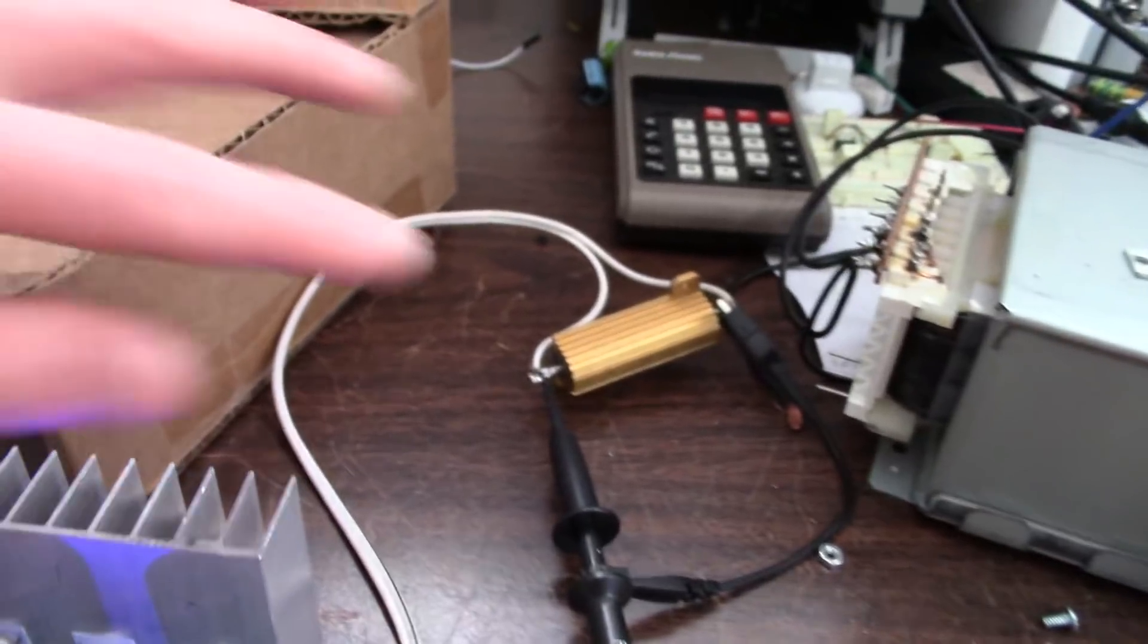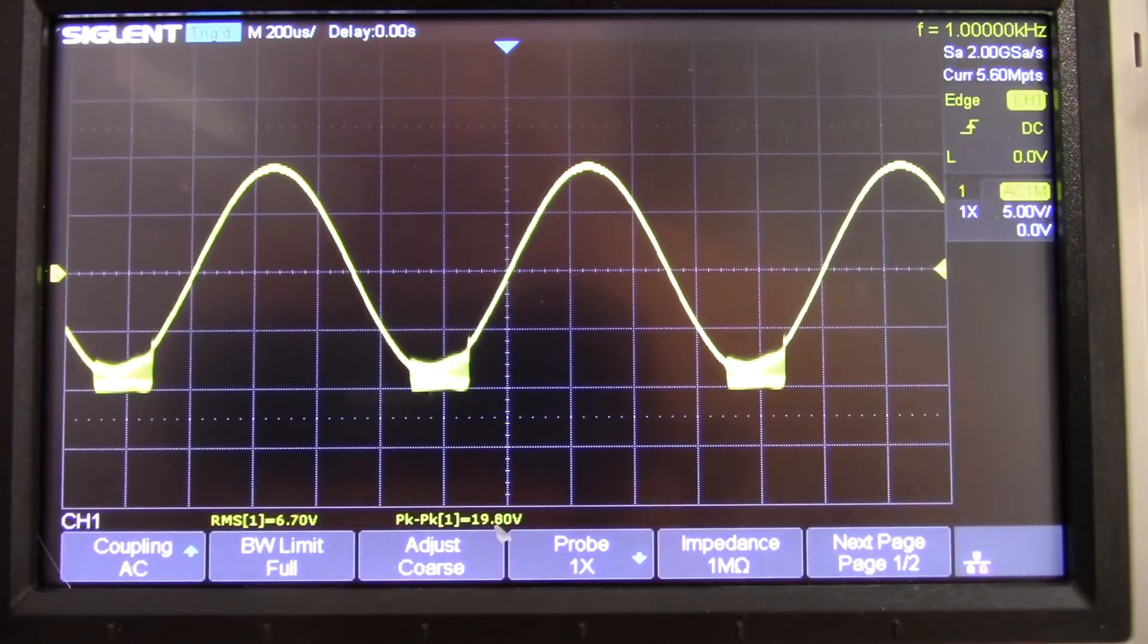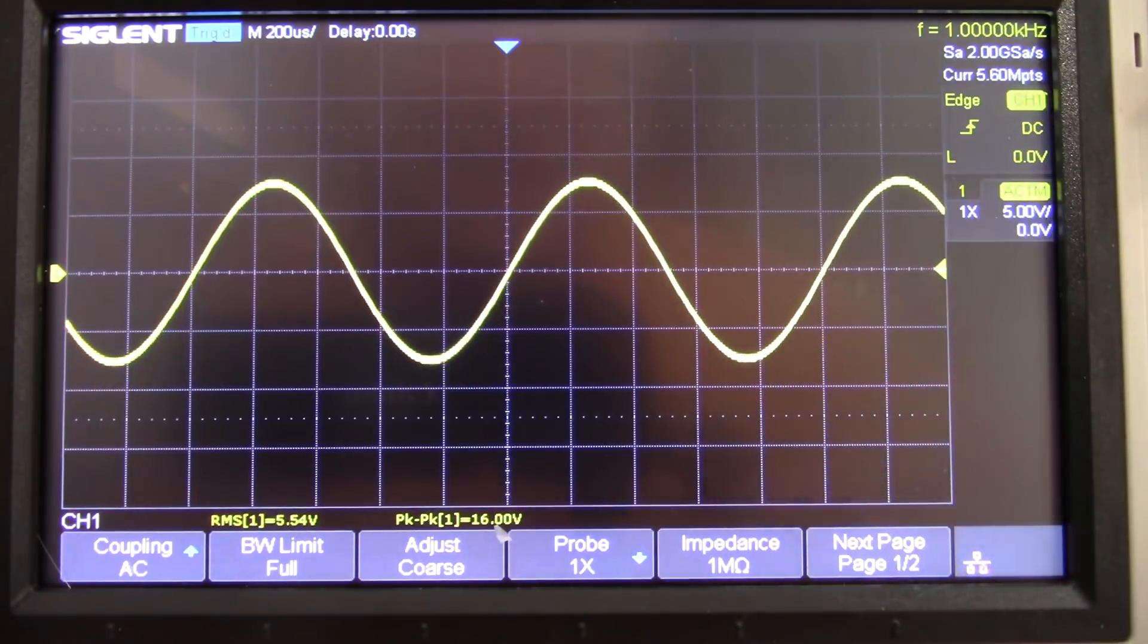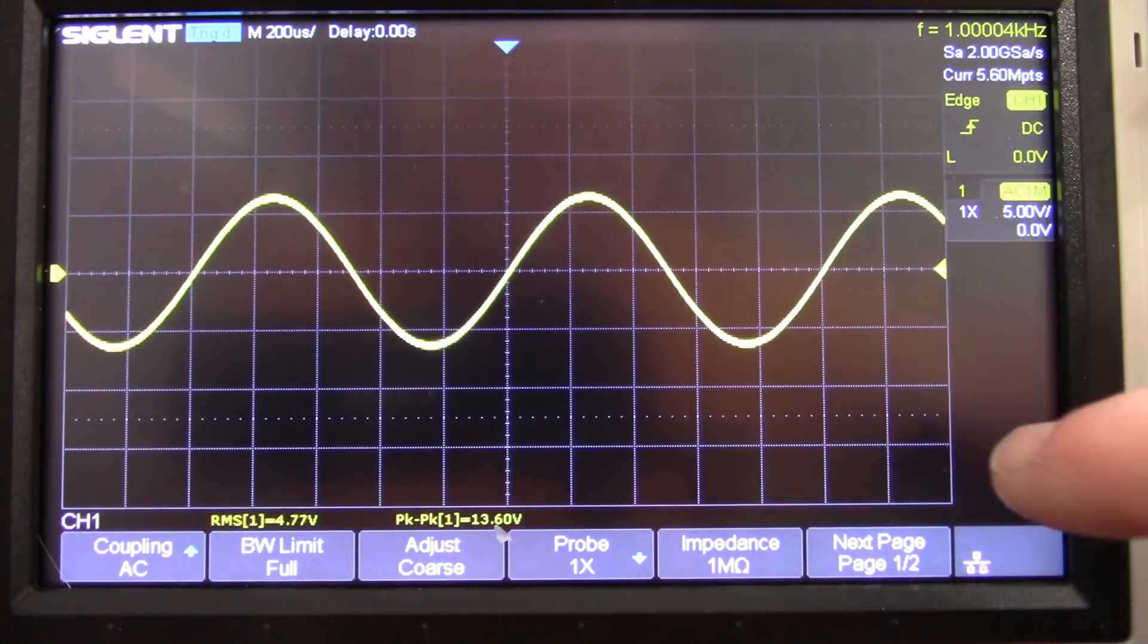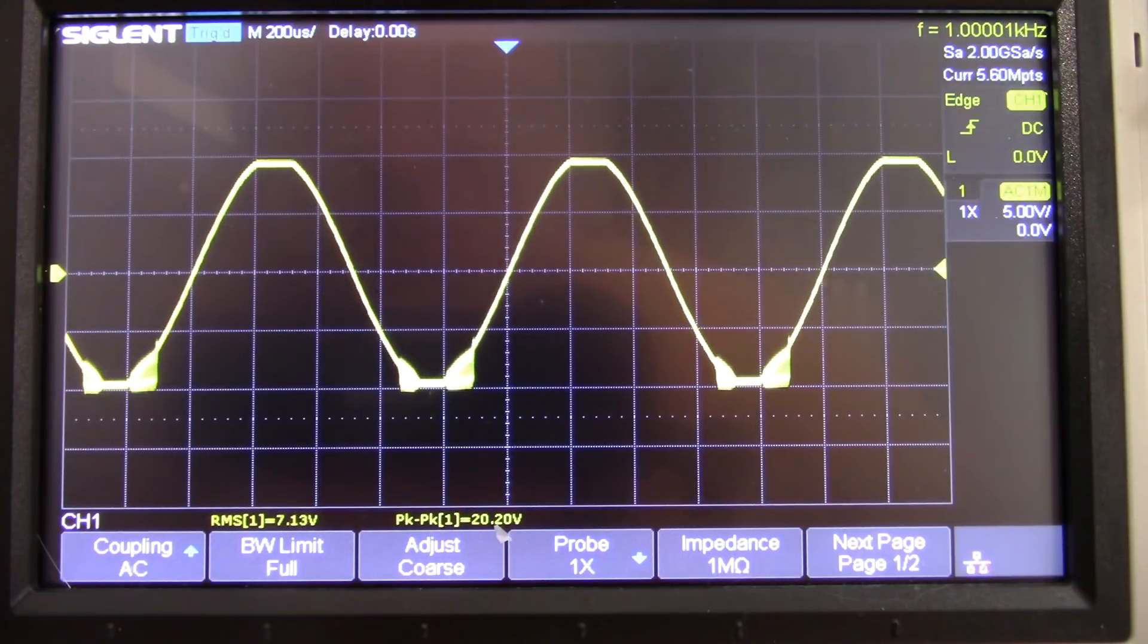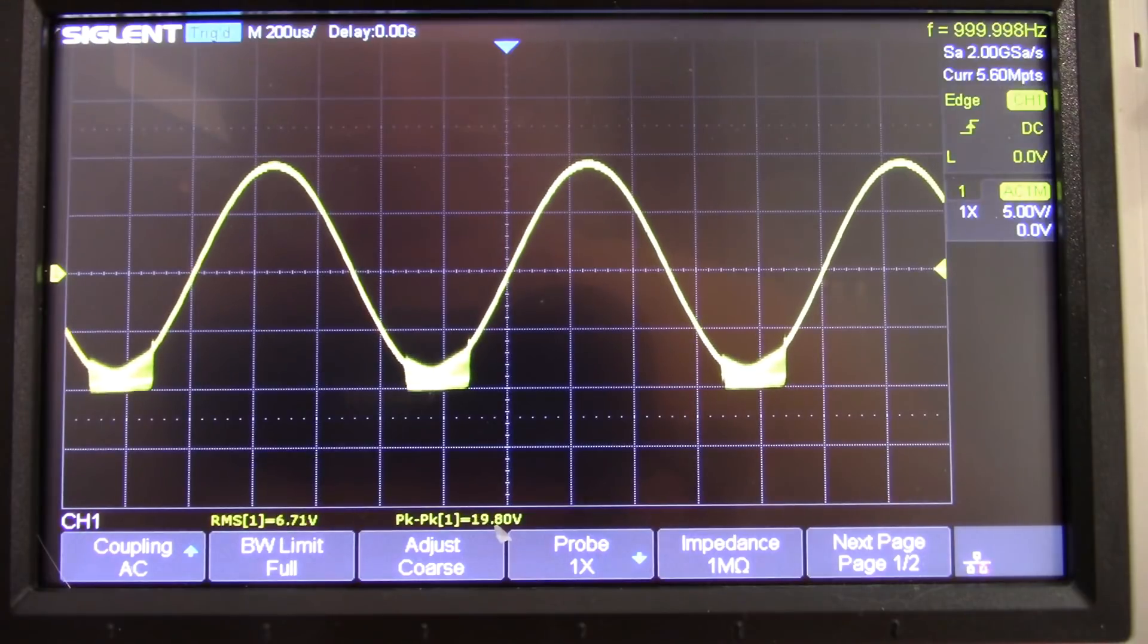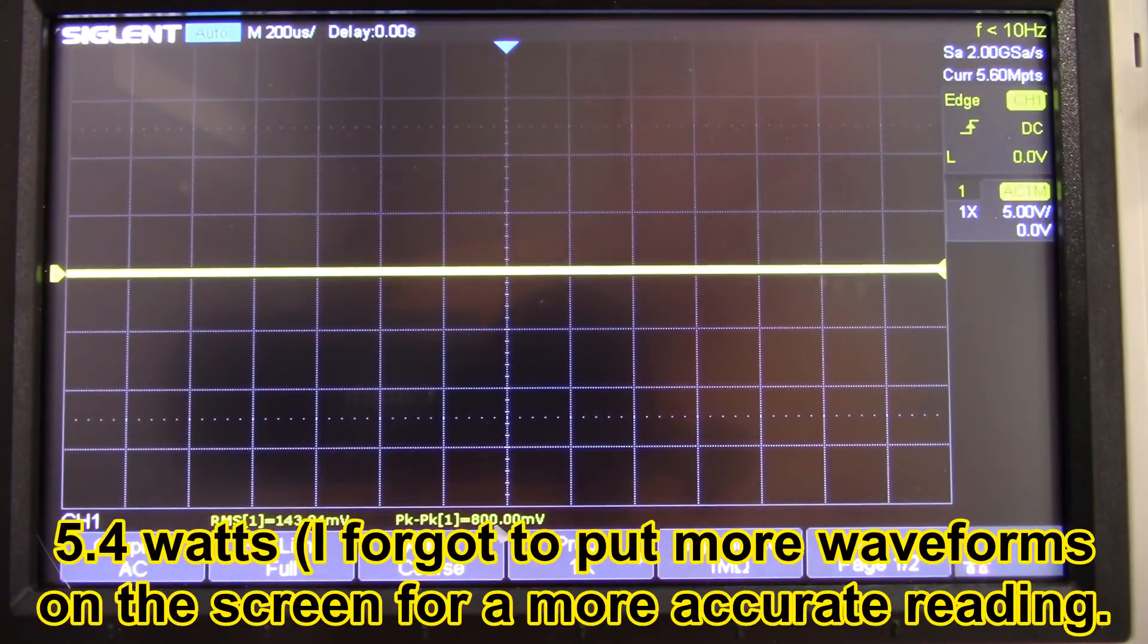But anyhow we'll go ahead and get an output measurement here, both channels driven. Okay let's crank this guy up. Oh it's oscillating. So I wonder if it's an attribute of those counterfeit chips or a board layout issue. Makes it kind of hard to get a measurement. I'll just tune out the clipping on the top. Getting 6.67 volts. So 6.67 volts squared divided by 8 is 5.56 watts, and that seems to be a little lower than I would expect.